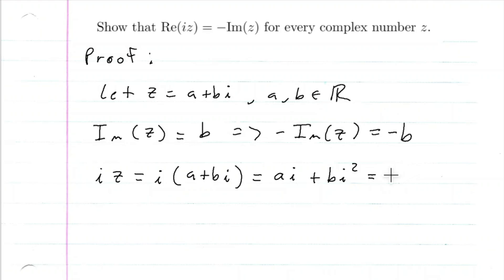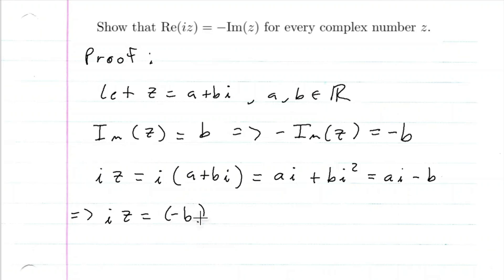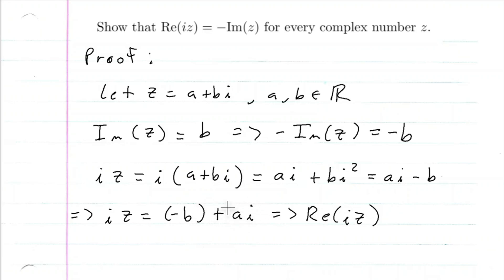And we know i squared is negative one. So this is equal to ai minus b, because i squared is negative one, and negative one times b is negative b. So this means that iz is going to be negative b plus ai. So the real part of i times z — the part that doesn't have an i attached to a real number — is going to be negative b.